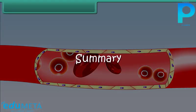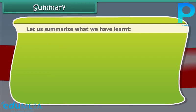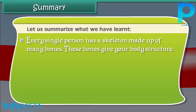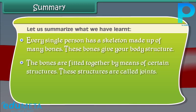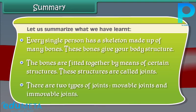Summary. Let us summarize what we have learned. Every single person has a skeleton made up of many bones. These bones give our body structure. The bones are fitted together by means of certain structures called joints.